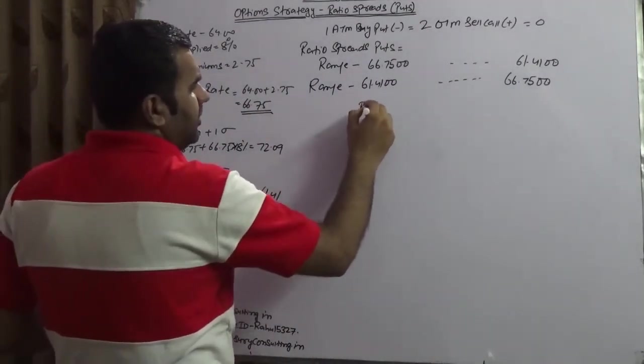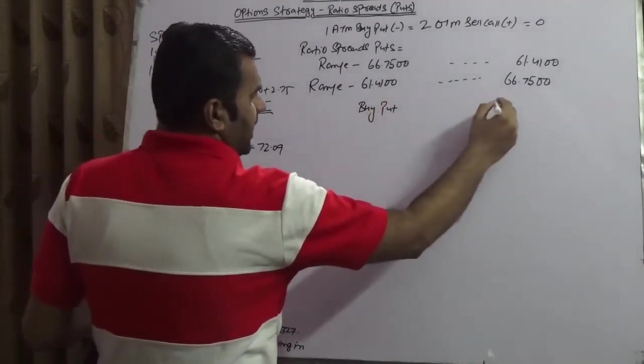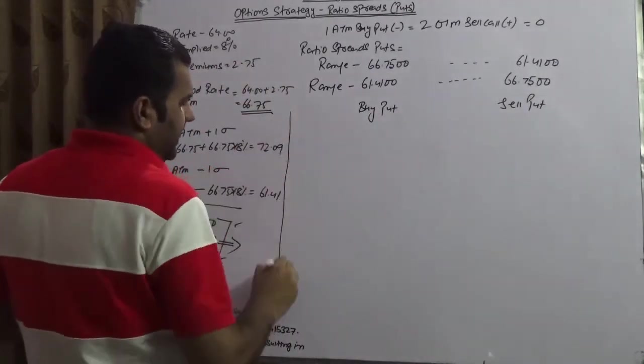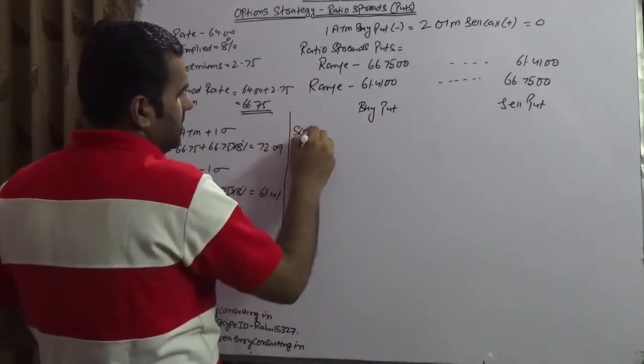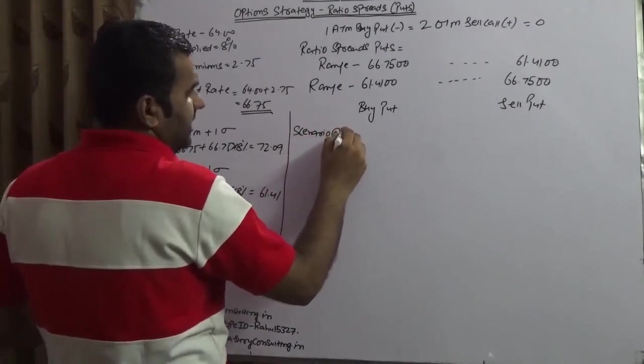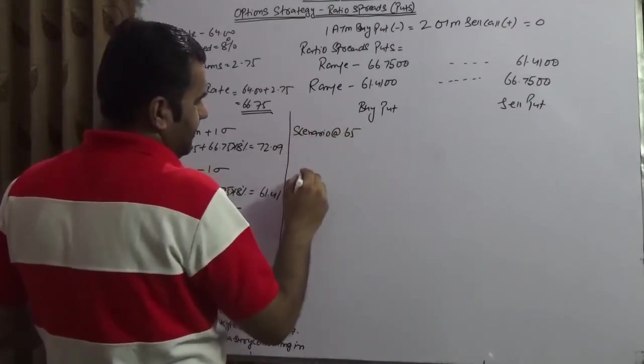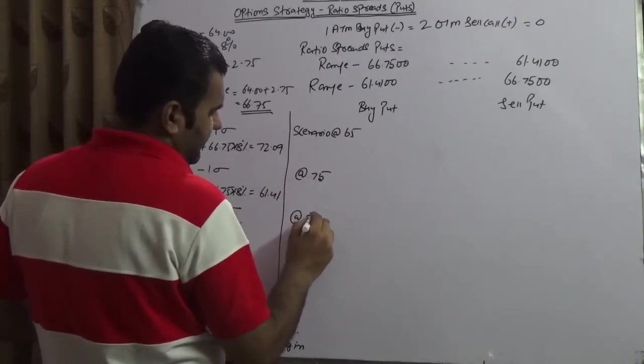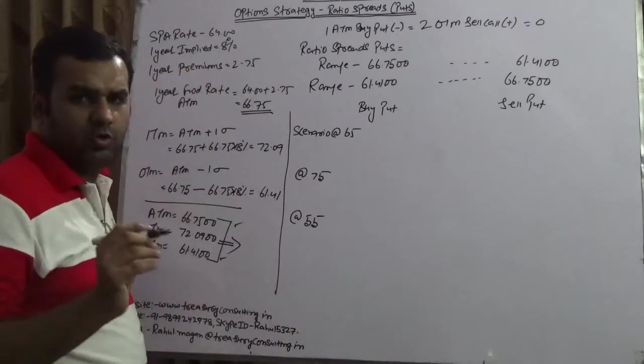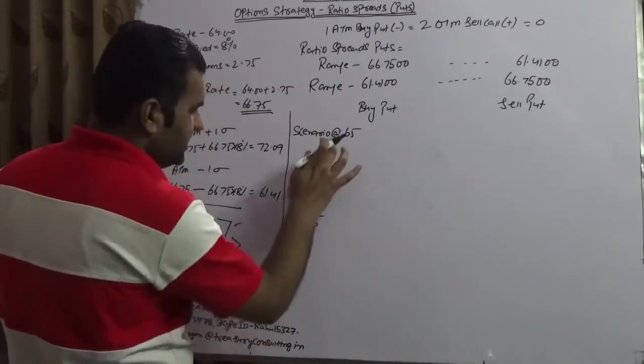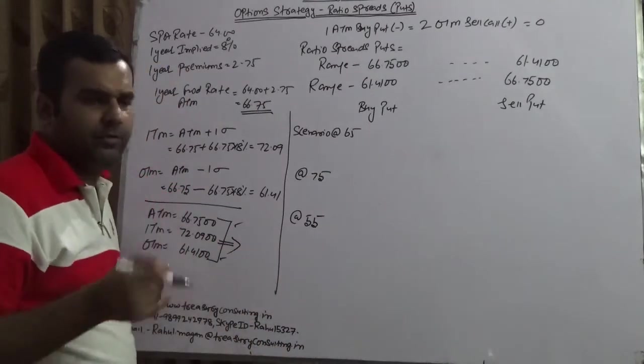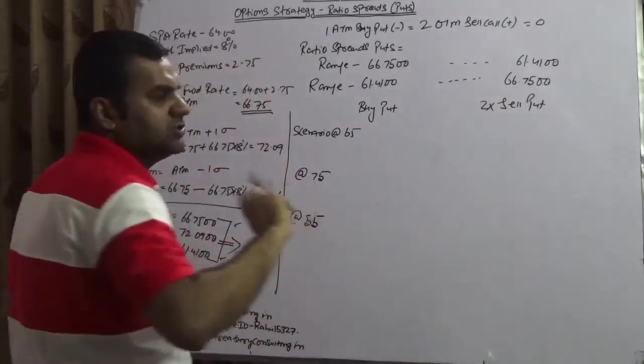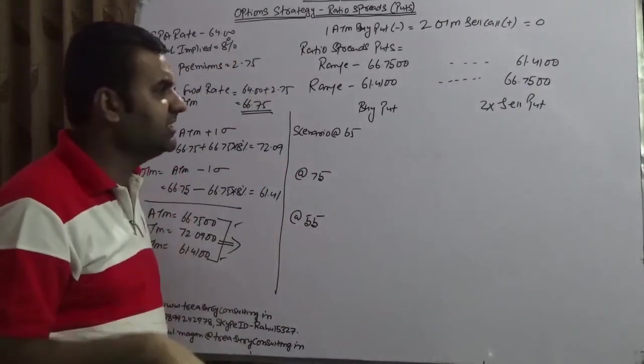Let us take three scenarios here. Let me write buy put and let me write sell put. Scenario at the rate 65, at the rate 75, at the rate 55. And these all are the Tokyo cuts. Let us go buy put and remember that let me write here two sell put because one buy put equals to one buy put. The premium which you paid equals to two sell put.